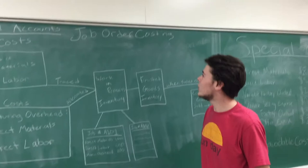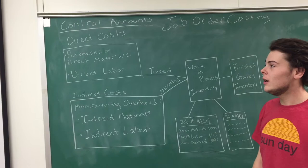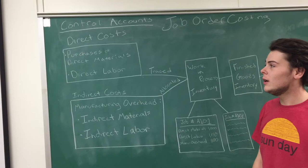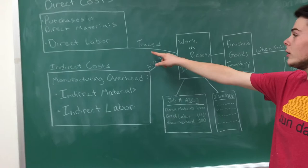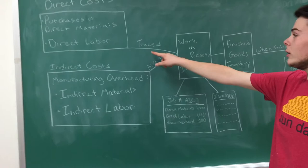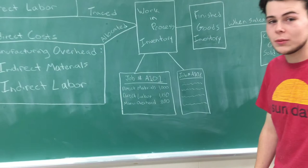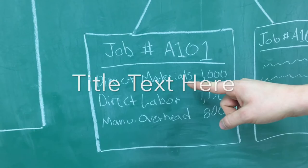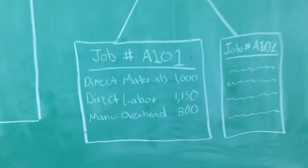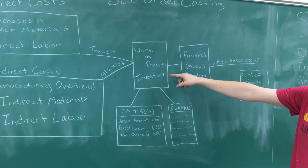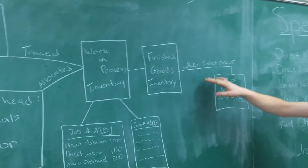Using the job order costing system, costs are taken from control accounts of direct costs and indirect costs such as purchases of direct materials, direct labor, and indirect costs such as manufacturing overhead, indirect materials, and indirect labor. Costs are traced and allocated into the work in process inventory. Within the work in process inventory, costs are recorded on job cost records. Each job will have a job identification number which records the individual cost for that job. After jobs are completed, they are transferred into the finished goods inventory, and when sales take place and revenue is collected, the cost of goods sold is recorded on the income statement.